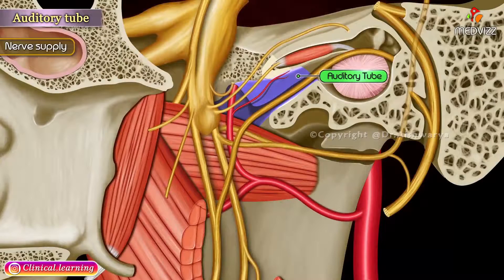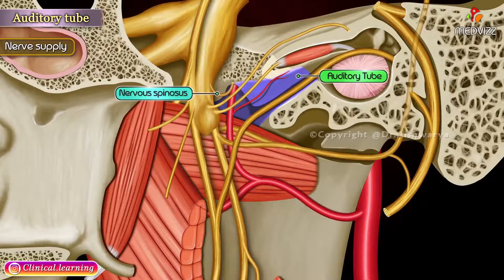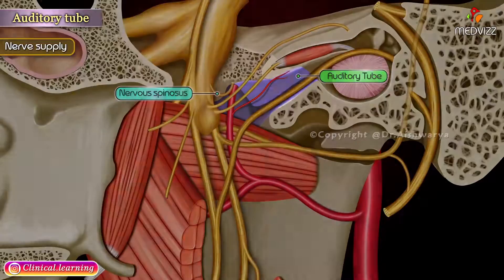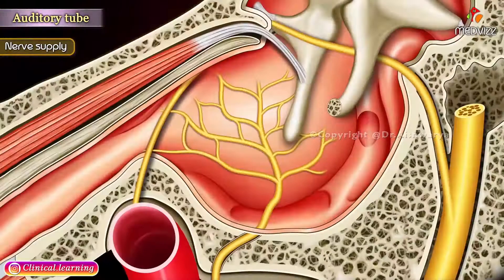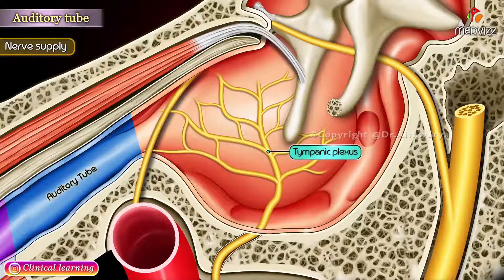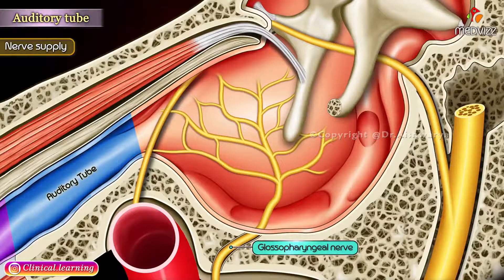Nerve supply: The cartilaginous part is supplied by the nervus spinosus, or meningeal branch of the mandibular nerve. The bony part is supplied by the tympanic plexus, formed by the glossopharyngeal nerve.